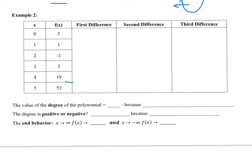For the next example: 53 minus 19 is 34; 19 minus 3 is 16; 3 minus negative 1 is 4; negative 1 minus 1 is negative 2. Those are the first differences. Now for the second difference: 34 minus 16 is 18.